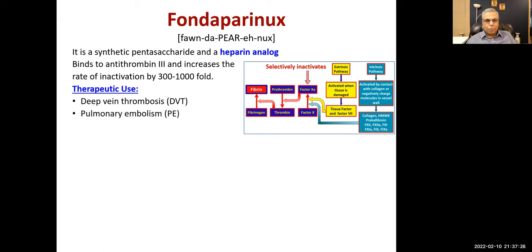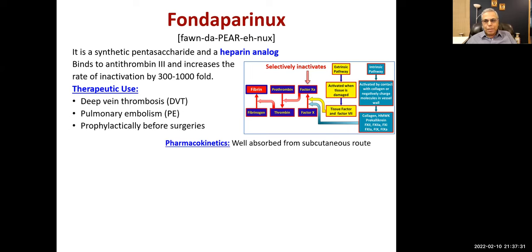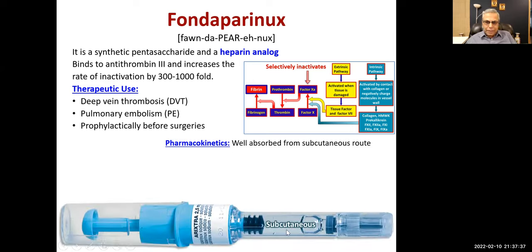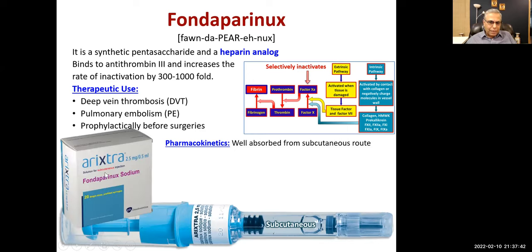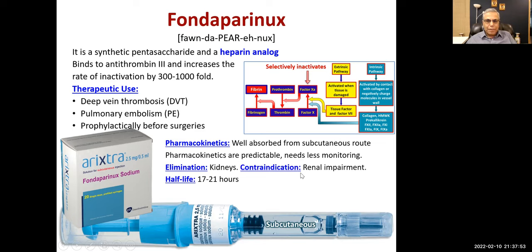Therapeutic uses: deep vein thrombosis, pulmonary embolism, and prophylactically before surgeries. Well absorbed from the subcutaneous route; comes as a pre-filled syringe. Pharmacokinetics are predictable — needs less monitoring than heparin. Elimination is through the kidneys, so it is contraindicated in renal impairment. Half-life 17 to 21 hours. Heparin-induced thrombocytopenia is possible but less likely than with heparin. Bleeding is an adverse effect.